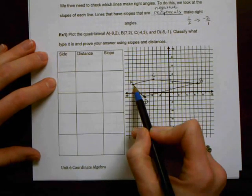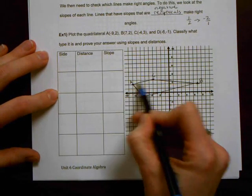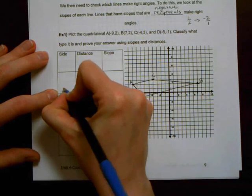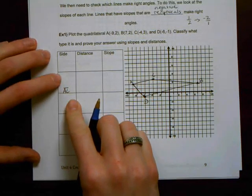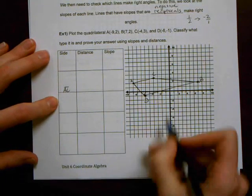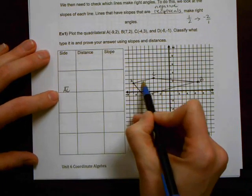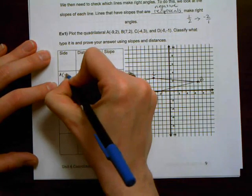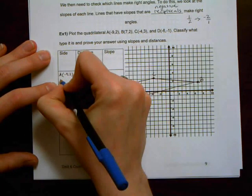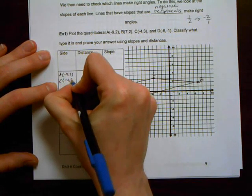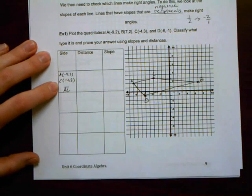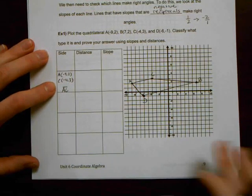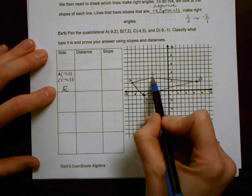So what we're going to be using to help us prove these quadrilaterals is a little table that looks like this. The first thing you're going to need are the different sides and we name line segments by their end points. So this side is going to be AC. I'm putting it towards the bottom because I'm going to need this space up here in just a minute. So the end points for AC are A is negative nine, two, and C is negative four, three. And I'm just putting those there for ease of reference.